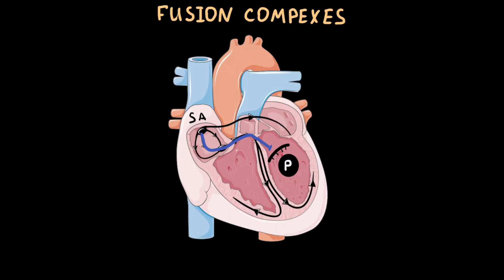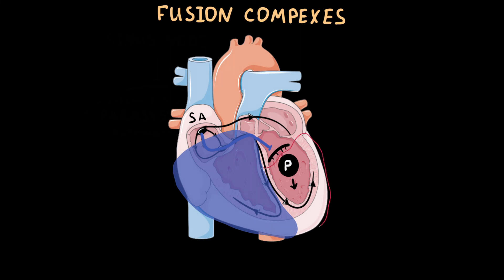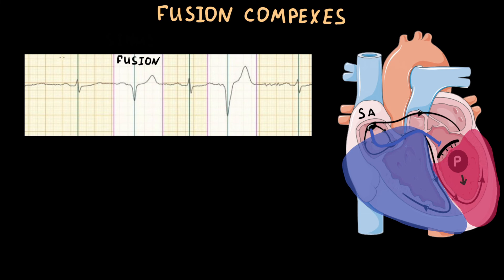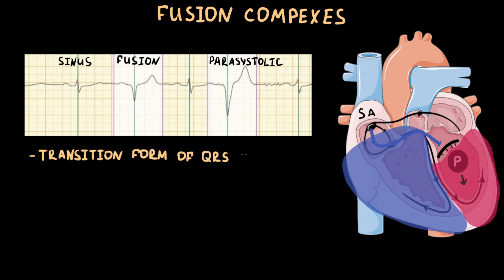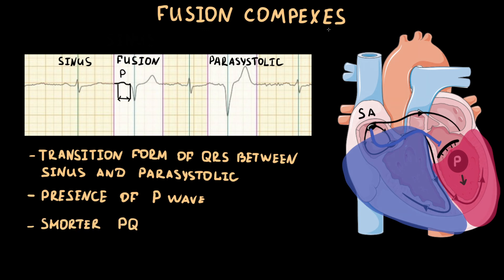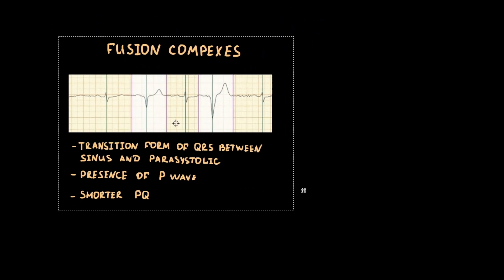Sometimes impulses from the sinus node and the parasystolic focus occur simultaneously. In this case, part of the ventricles is activated by the sinus node and part by the parasystolic focus, producing fusion complexes on ECG. Fusion complexes typically have a transitional shape between the normal sinus complex and the parasystolic ventricular complex. They are characterized by the presence of a P wave recorded before the fusion beat, since atrial activation by the sinus node is unaffected, and the PR interval is usually shorter than in normal sinus activation. The presence of fusion beats is the third criterion of ventricular parasystole.